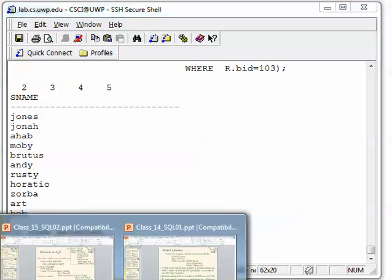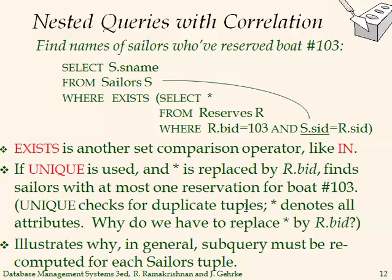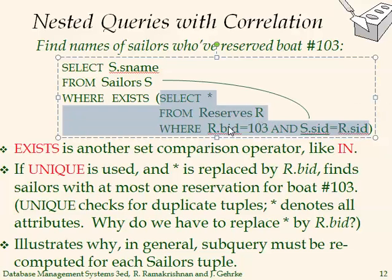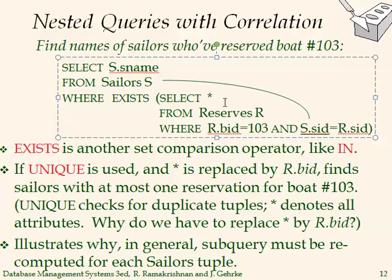Here's another example using correlation to solve the same query — but now using EXISTS instead of IN. EXISTS means: select the name if this subquery returns something that is not empty, i.e., there is a reservation for boat 103 made by this person. If it's not empty, that's what EXISTS returns. If we want it to be empty, we use NOT EXISTS.